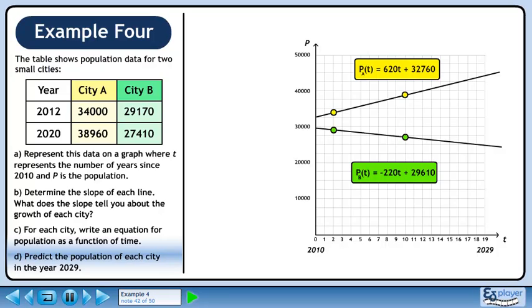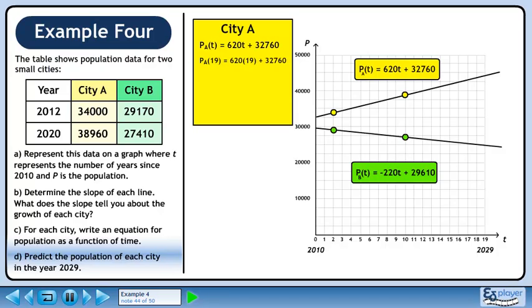In part D, we'll predict the population of each city in 2029. Let's find the population of city A in 2029. Plug in 19 for t since 2029 is 19 years after 2010.